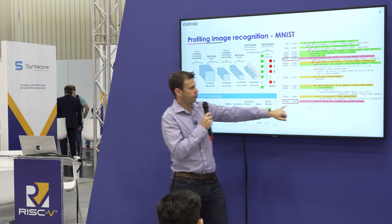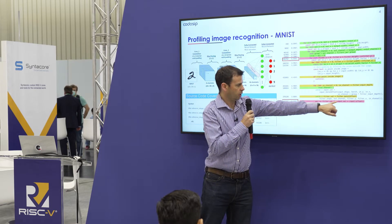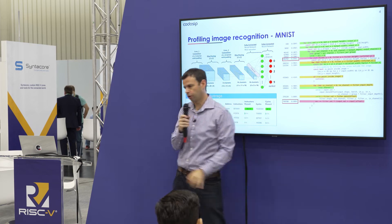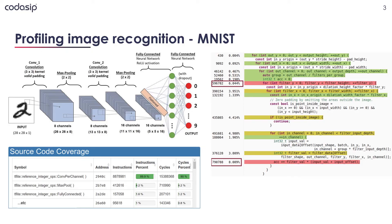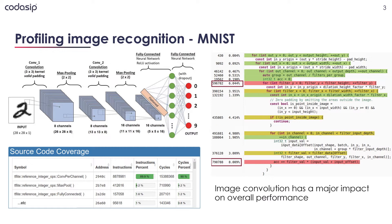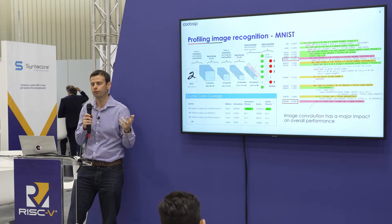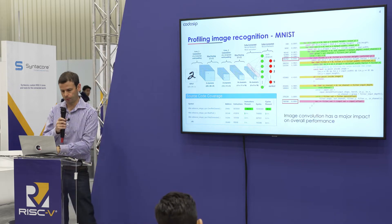In particular, there's a multiply-accumulate type operation that takes a significant amount of time. So if we can find a way to accelerate our image convolution, we should be able to get a major improvement in performance.